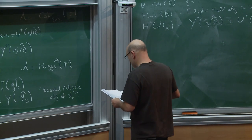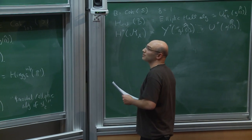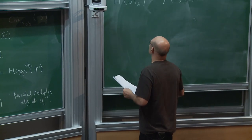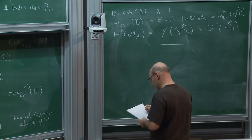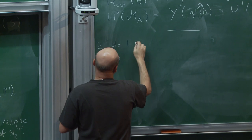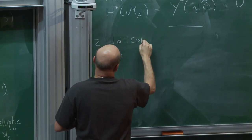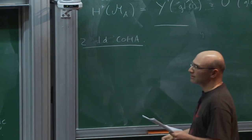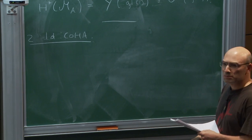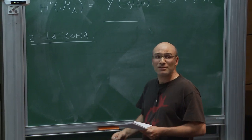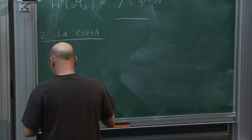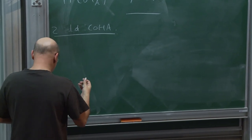I've abused enough of your gullibility, so I'll move to the dimension one case, where we can actually make some more precise computations. D equals 1, one-dimensional CoHA. One-dimensional means you have a zero potential, which looks stupid — I will try to argue that in the end it isn't.